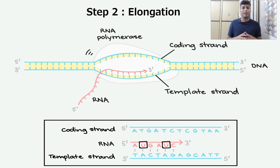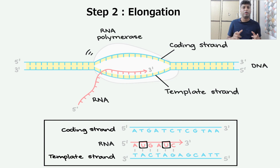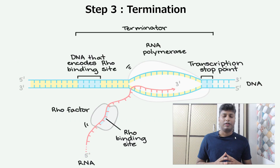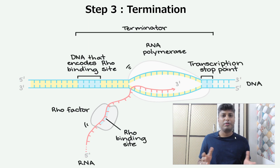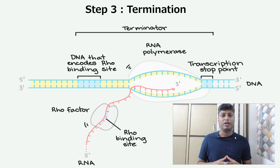The coding strand has the exact same sequence as the newly formed RNA — the only difference is that the RNA will have uracil instead of thymine. In the process of elongation, the RNA polymerase will keep on joining the nucleotides and will keep on forming the RNA. The third step is called termination — termination means to stop. In this step, the RNA polymerase enzyme is going to stop forming the RNA.